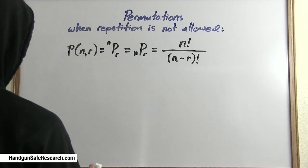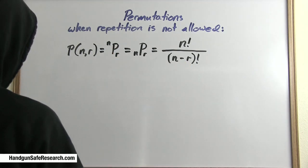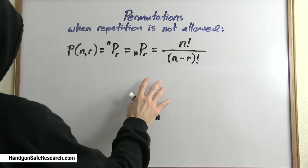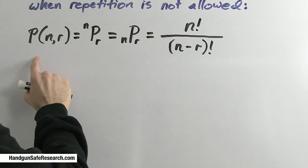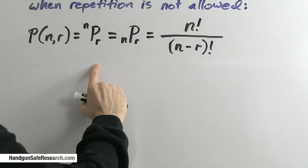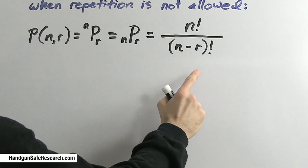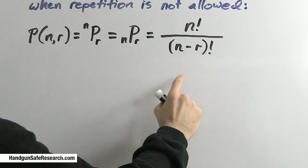So let's talk about permutations when repetition is not allowed. There's a bit more to the notation on this. You may see it written like this: P(n,r). You may see this or this. The basic formula is right here: n factorial over (n minus r) factorial.